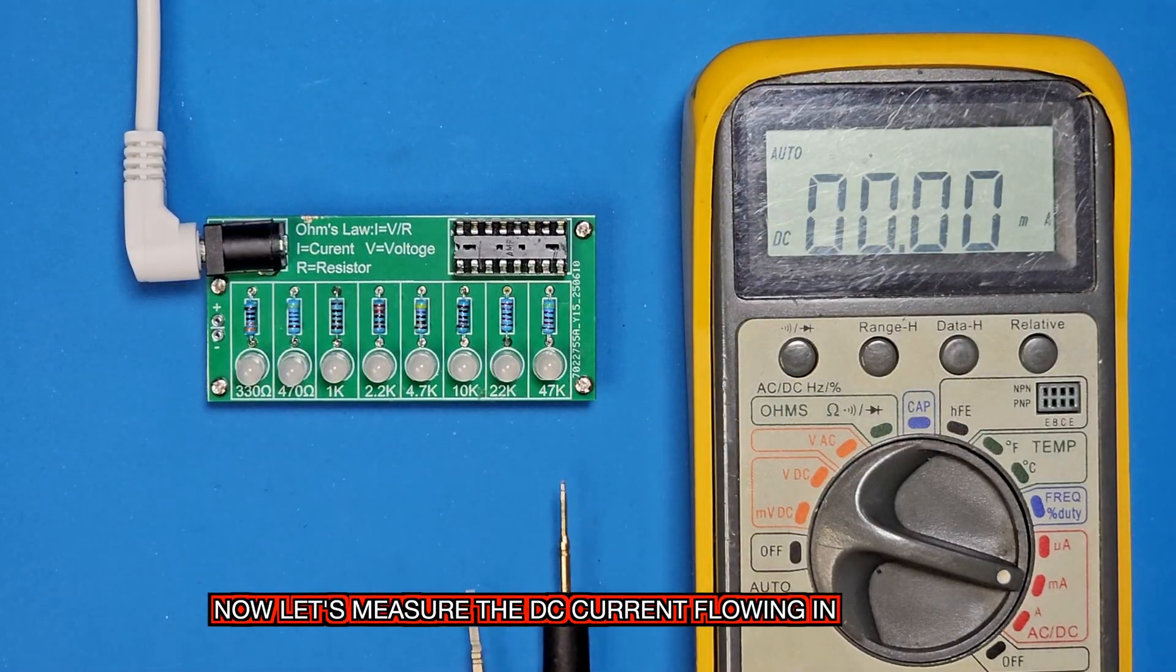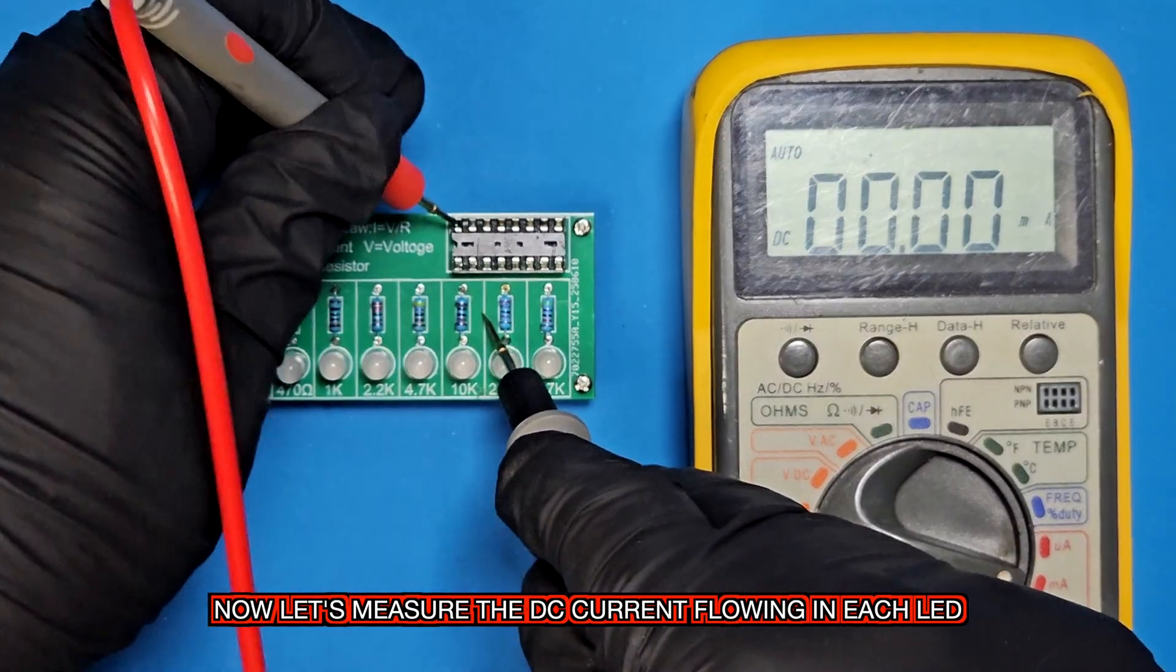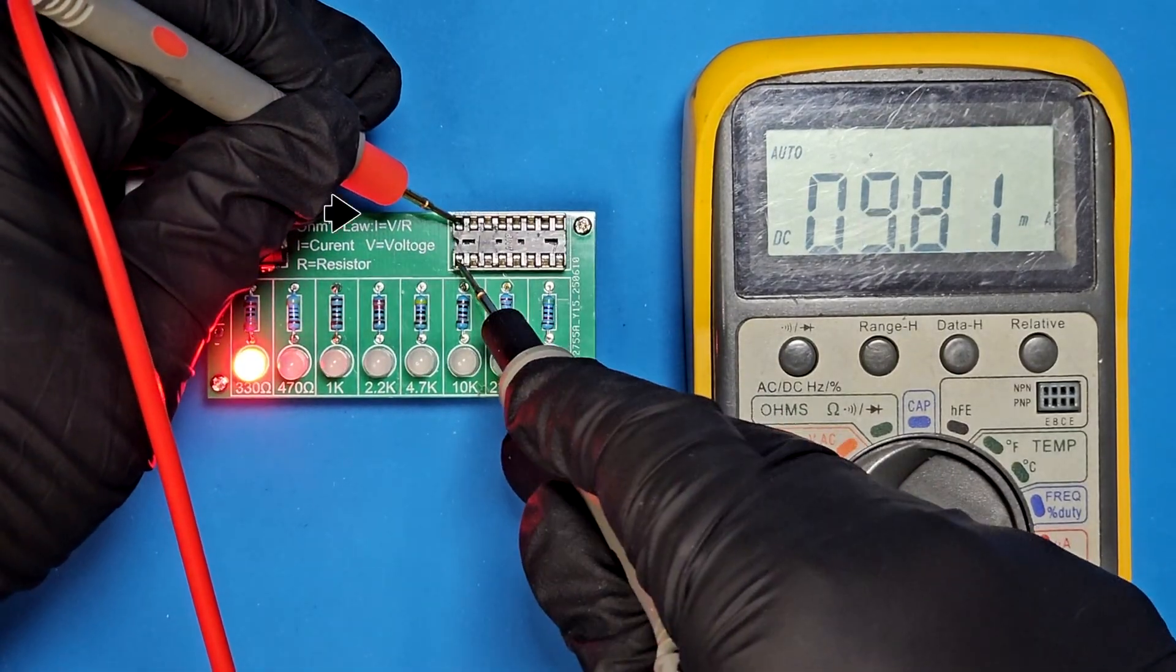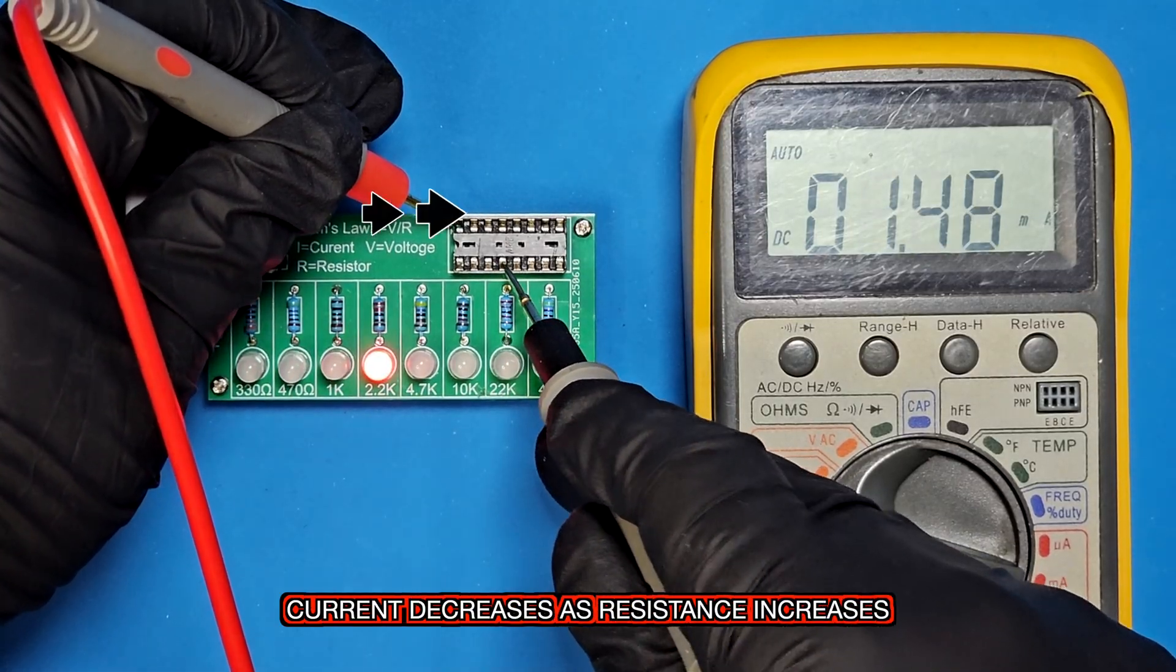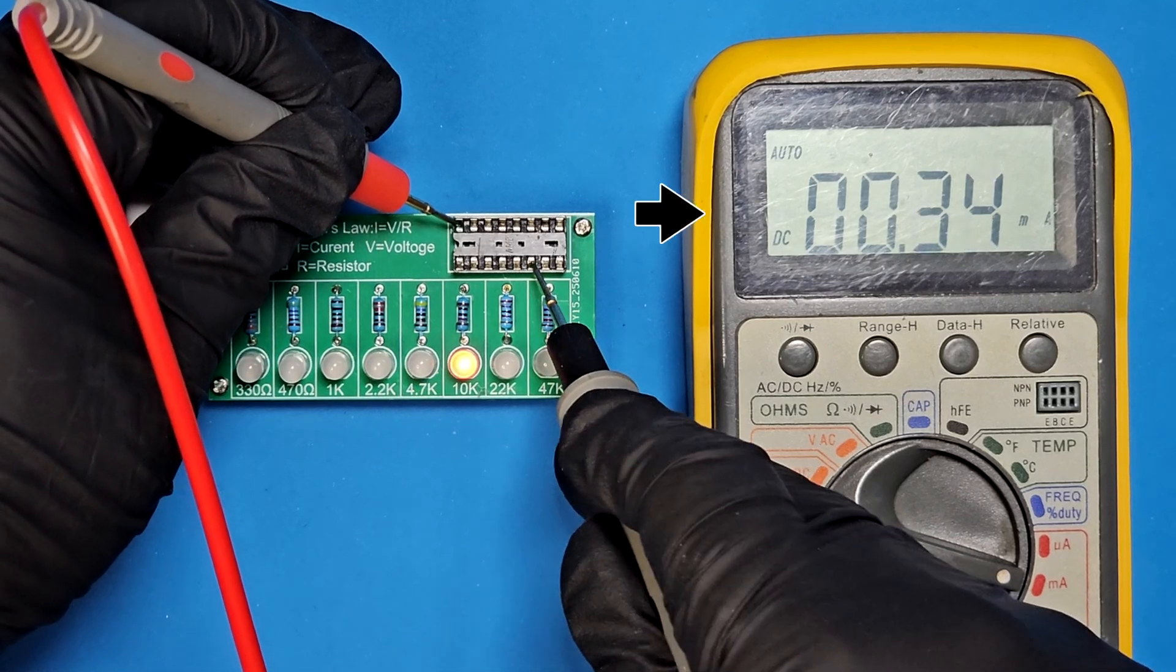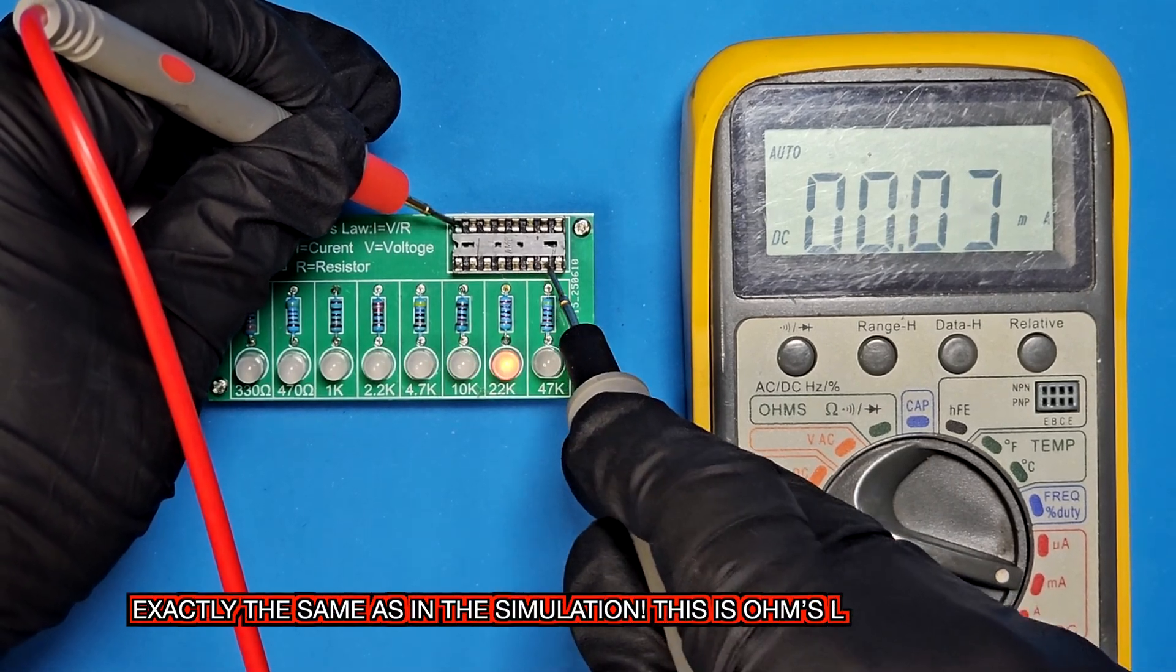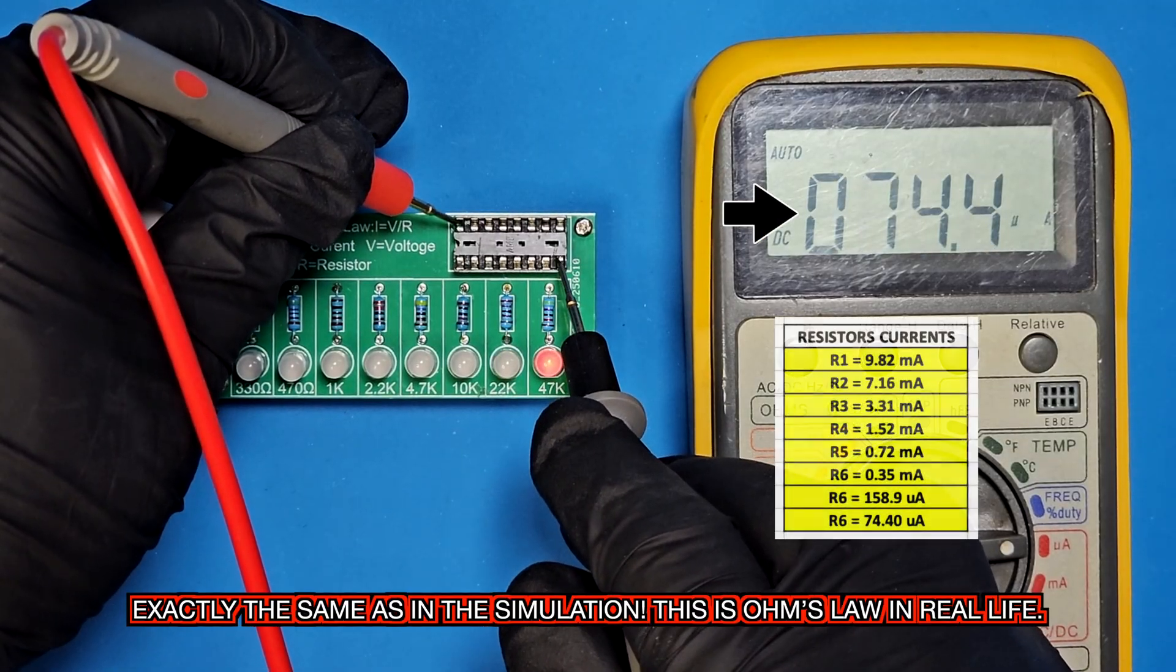Now, let's measure the DC current flowing in each LED. The current decreases as resistance increases. The readings are exactly the same as in the simulation. This is Ohm's law in real life.